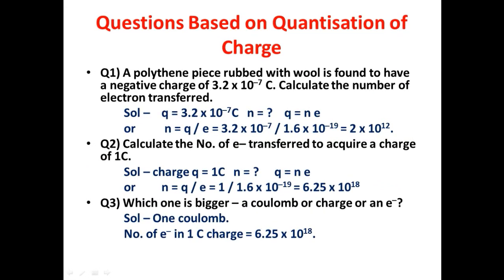Question 1: A polythene piece is rubbed with wool and found to have a negative charge of 3.2 × 10⁻⁷ coulombs. Calculate the number of electrons transferred. Using Q = ne, n = Q/e = 2 × 10¹² electrons. Question 2: Calculate the number of electrons transferred to acquire a charge of 1 coulomb. Here Q = 1 coulomb, n = Q/e = 1 / (1.6 × 10⁻¹⁹) = 6.25 × 10¹⁸ electrons.